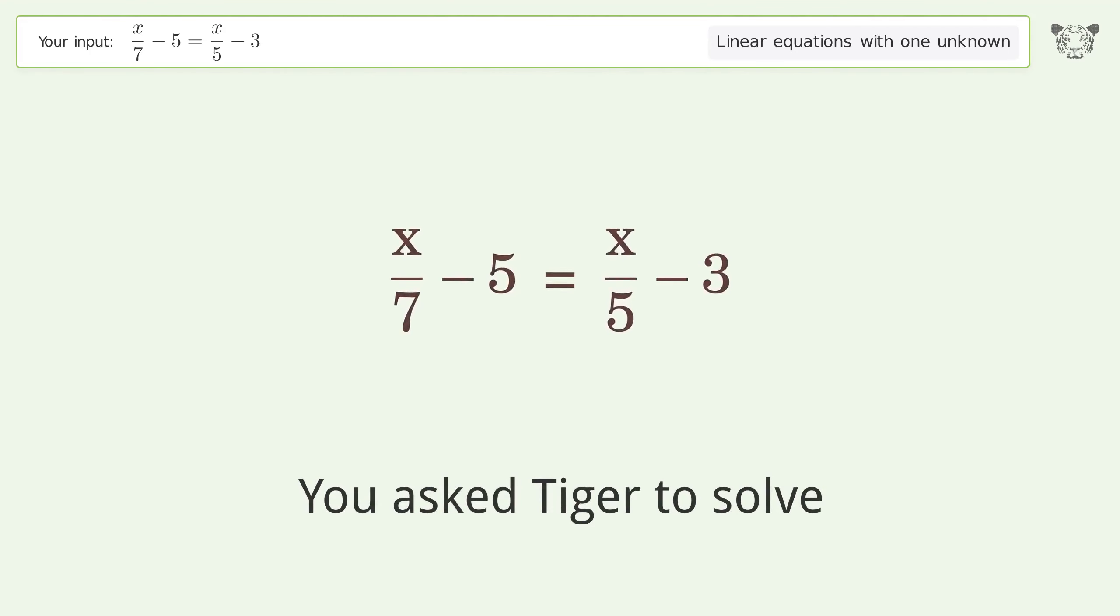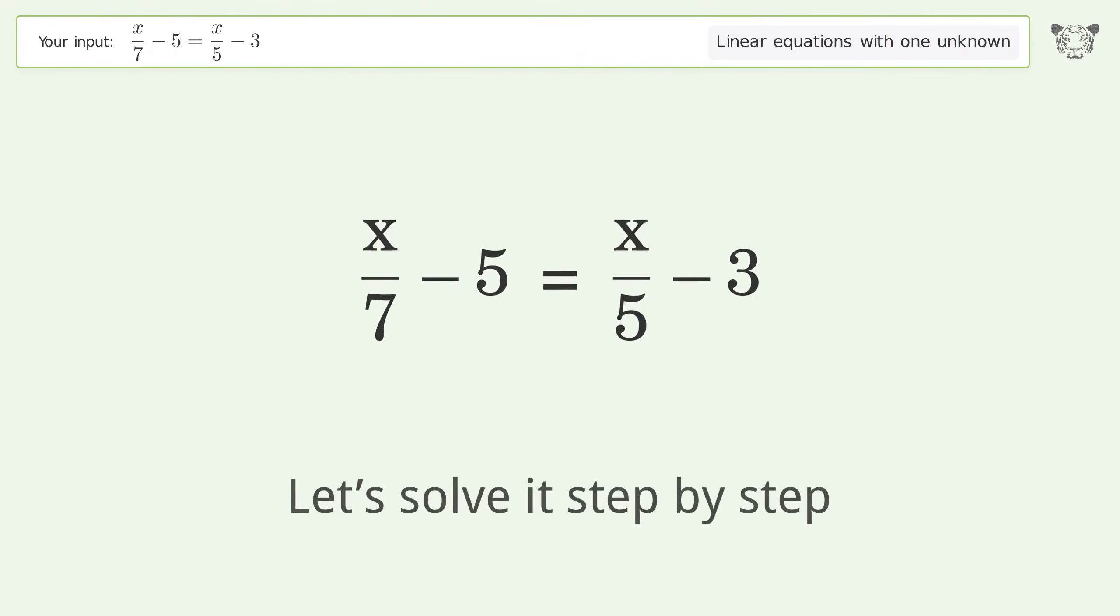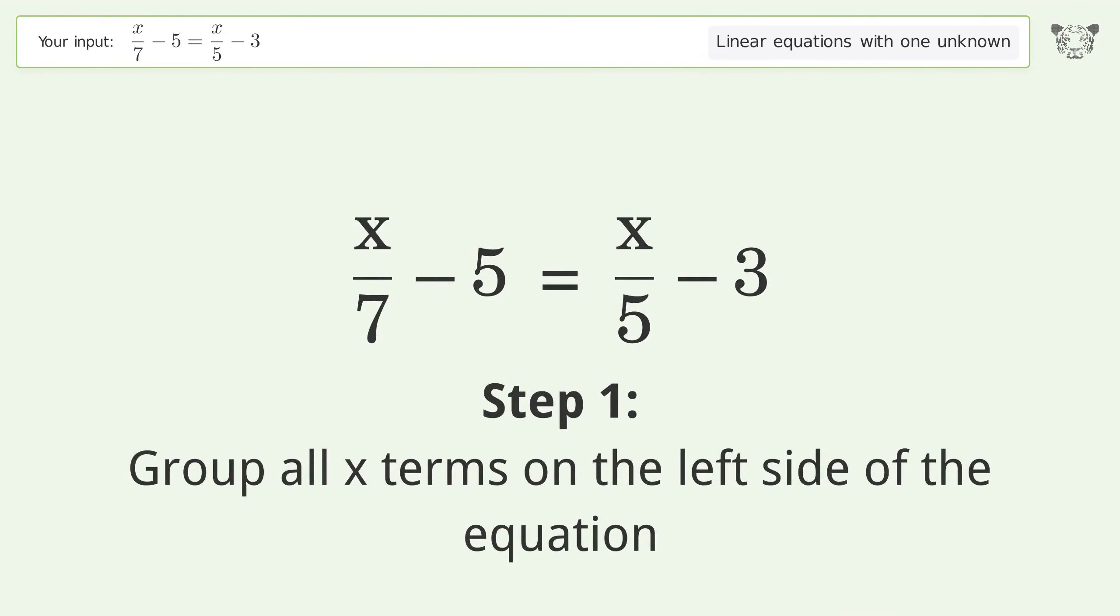You asked Tiger to solve this problem dealing with linear equations with one unknown. The final result is x equals negative 35. Let's solve it step by step. Group all x terms on the left side of the equation.